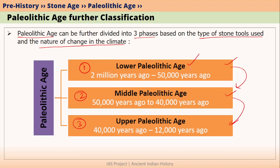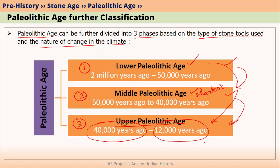The Lower Paleolithic Age was the oldest part of Paleolithic Age. After Lower Paleolithic Age, we had Middle Paleolithic Age, which was the shortest part, seen mainly as a transitional phase. If we look at the Upper Paleolithic Age, it started somewhere around 40,000 years ago and lasted up to 12,000 years ago — roughly 28,000 to 30,000 years.